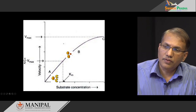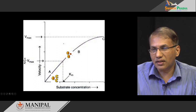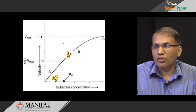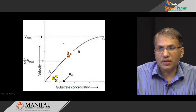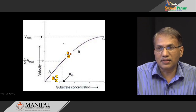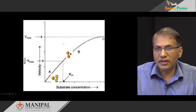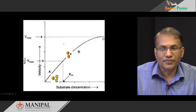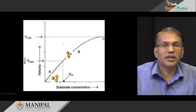Most enzyme-catalyzed reaction velocity is measured at phase A because we can directly have an equation and measure enzyme activity. In phase B, as more and more substrate comes into the picture, the availability of free active sites is comparatively less than in phase A — they are more or less equalized. The rate of reaction still increases as substrate concentration increases, but it is not as proportional as in phase A. This part of the curve shows mixed-order kinetics.